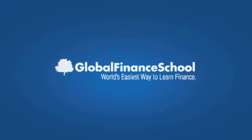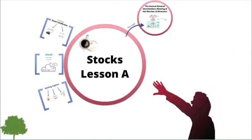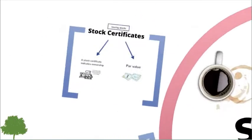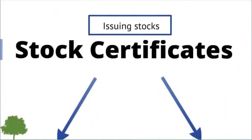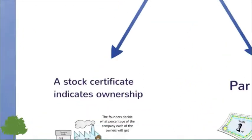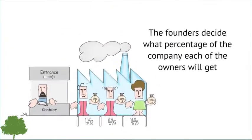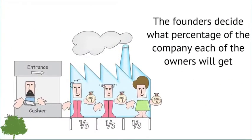Global Finance School — Stocks Lesson A: Stock Certificates. Issuing stocks is one of the first steps when establishing a company. A stock certificate indicates ownership, and the founders decide what percentage of the company each of the owners will get. In this process, the owners take the investor's initial investment into consideration.